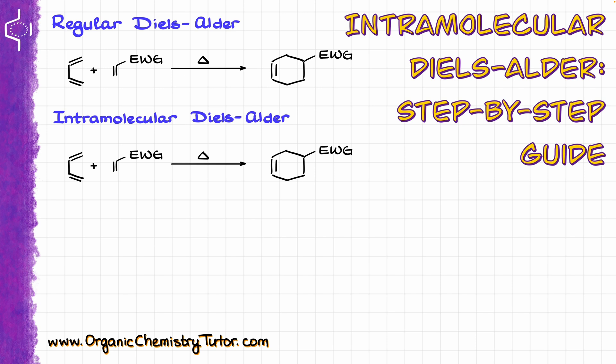When it comes to the intramolecular version of this reaction, the diene and the dienophile are going to be connected with each other. I will very schematically show it as a semicircle. Because these are connected, those same atoms are also going to be connected by a chain in our product as well. Which means that if a regular Diels-Alder reaction gives us one cycle, the intramolecular Diels-Alder reaction is going to give us two cycles right away, and typically we are going to be creating that extra cycle on the side of our molecule.